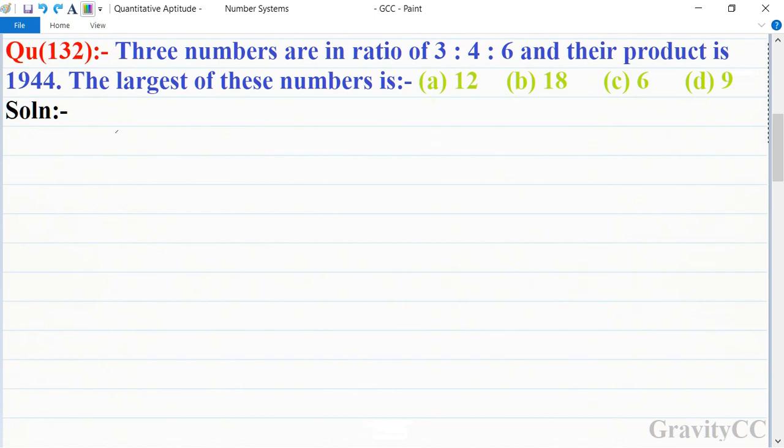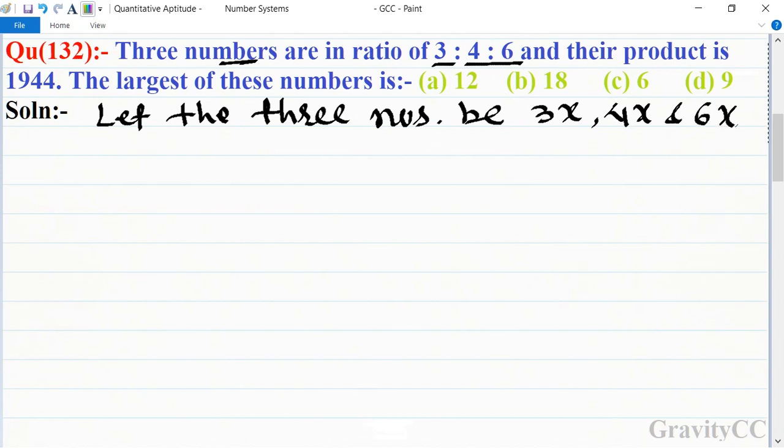In this question, the ratio of the three numbers is given as 3 is to 4 is to 6. So first of all we let the three numbers be 3x, 4x, and 6x.